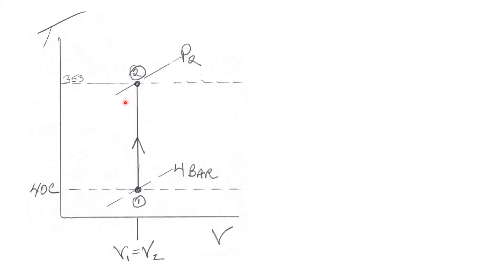Let's draw a T-V diagram for this process. The initial state is at 4 bar and 40 degrees C. And the final state is directly above that on a T-V diagram because the final specific volume is equal to the initial specific volume. And that state exists at 353 degrees C and our final pressure we calculated to be 8 bar.